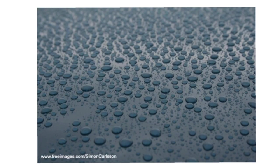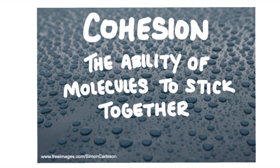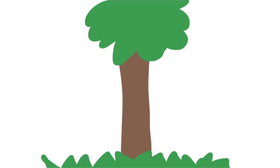Ever notice water beading up on a window like this? This beading is the result of water molecules' cohesion — the ability of water molecules to stick to one another — which is due to their ability to hydrogen bond. Water has a very high cohesion compared to other molecules, and life literally depends on it. It's because of this high cohesion that water can move up a tree from the roots to the leaves, moving against the force of gravity.